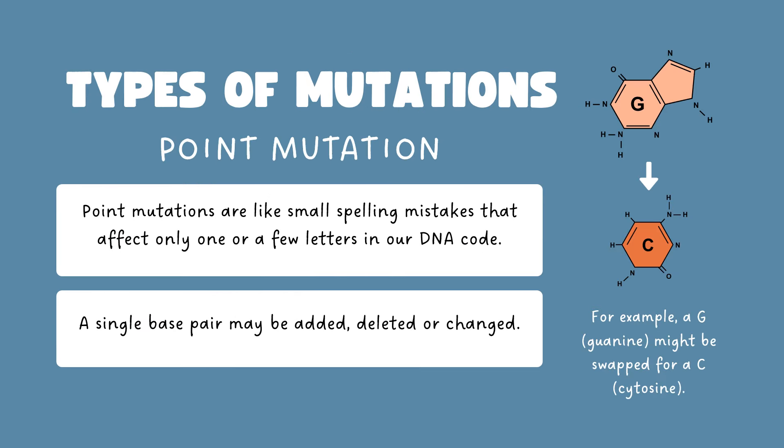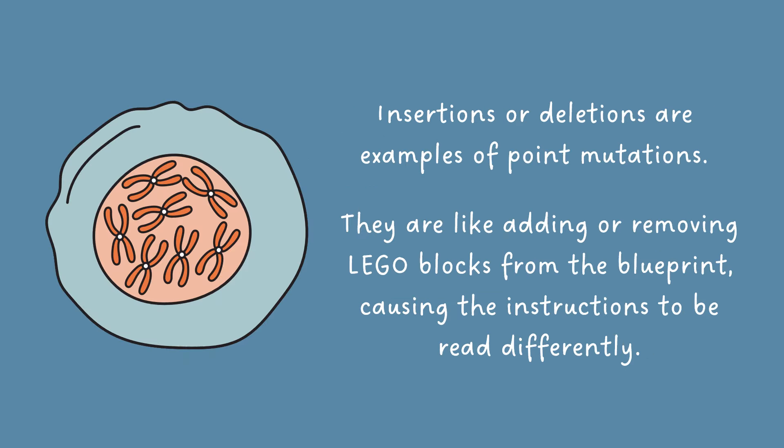There are some types of mutations. The first one is the point mutation. Point mutations are like small spelling mistakes that affect only one or a few letters in our DNA code. A single base pair may be added, deleted, or changed. For example, a G, that is guanine, might be swapped for a C, cytosine. Insertions or deletions are examples of point mutations — they are like adding or removing Lego blocks from the blueprint, causing the instructions to be read differently.